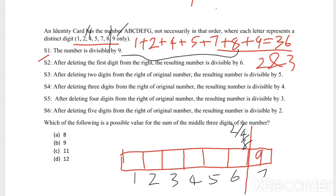After deleting 2 digits from the right of the original number, the resulting number is divisible by 5. The divisibility test for 5 requires the last digit to be 0 or 5. In our set, only 5 qualifies. Therefore, the 5th digit is 5.